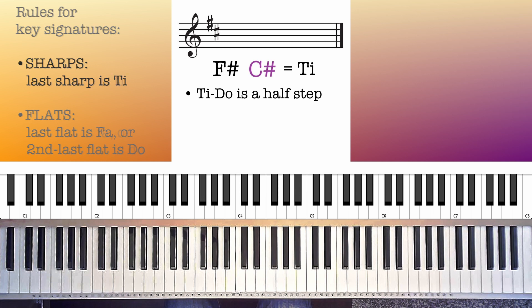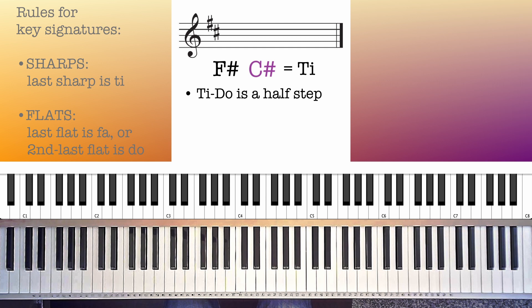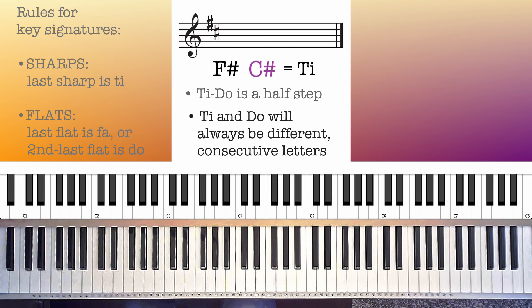You may remember the major scale contains two and only two half steps between Mi and Fa and between T and Do. The other steps in the scale are all whole steps. The other fact we need comes from the way we spell scales, which is that the letter names for T and Do will always be different letters, and they will always be consecutive letters. T and Do will never be G and G sharp. If T is G, Do will have to be spelled A flat. In this key, since T is spelled with the letter name C, in this case C sharp, Do has to have the letter name D, even if we haven't yet established whether it's D flat, D natural, or D sharp.